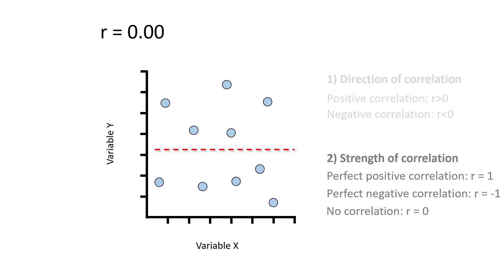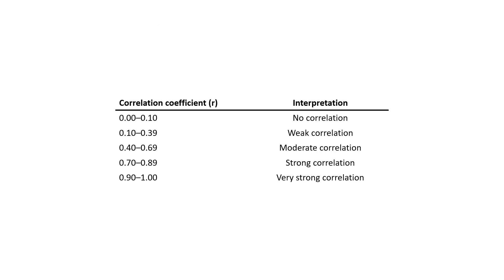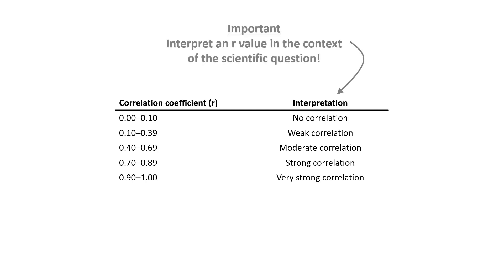There have been some attempts to apply cut-offs to the absolute correlation coefficient value to describe the magnitude of correlation between two variables. However, these are very broad cut-offs that do not take into account the scientific question. It is very important to interpret a correlation coefficient value in the context of the experiment in question. For example, an r-value of 0.2 may indicate a weak correlation in some scientific disciplines, but it might actually be a rather large correlation in other areas of science.